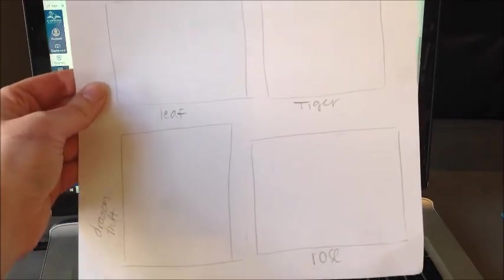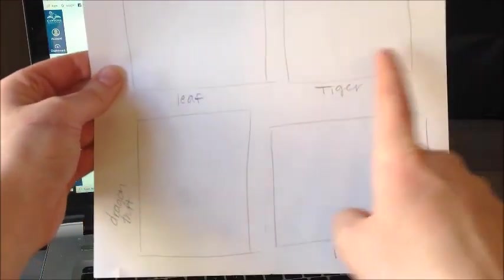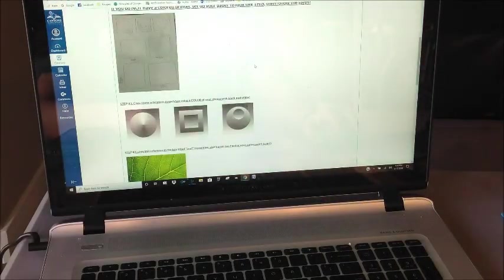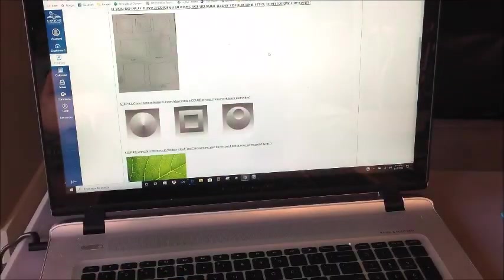You also want to label the bottom four squares. One is leaf, one's tiger, one's the dragon fruit, and one's the rose. So either you've got your worksheet printed like this or you have your paper ready. And then I'm just going to be showing you kind of a step-by-step of how to do that.